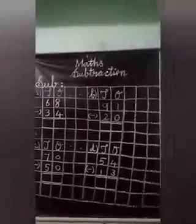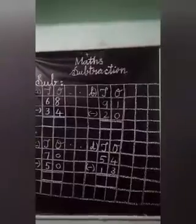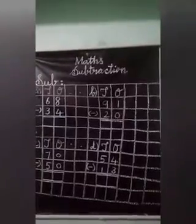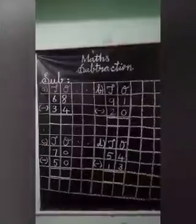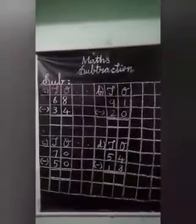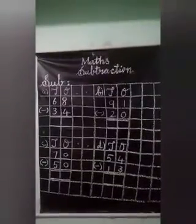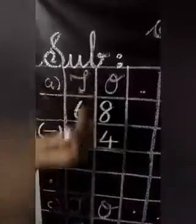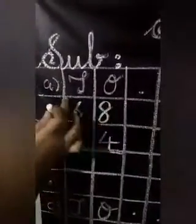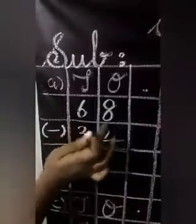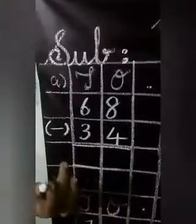Hello children, good morning! In our last session we learned subtraction of single digit numbers. Today we are going to learn subtraction of double digit numbers. Let's start the class. Our first problem: ones and tens — 68 minus 34 is equal to how much?